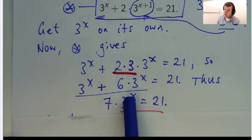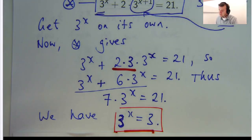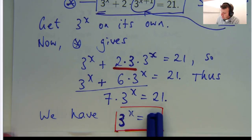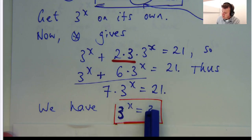Okay, so let's get the 3 to the x on its own. Divide both sides by 7 and I get 3 to the x equals 3. So what value of x solves this equation? Well, you can look at it, 3 to the power of 1 equals 3. So x equals 1.